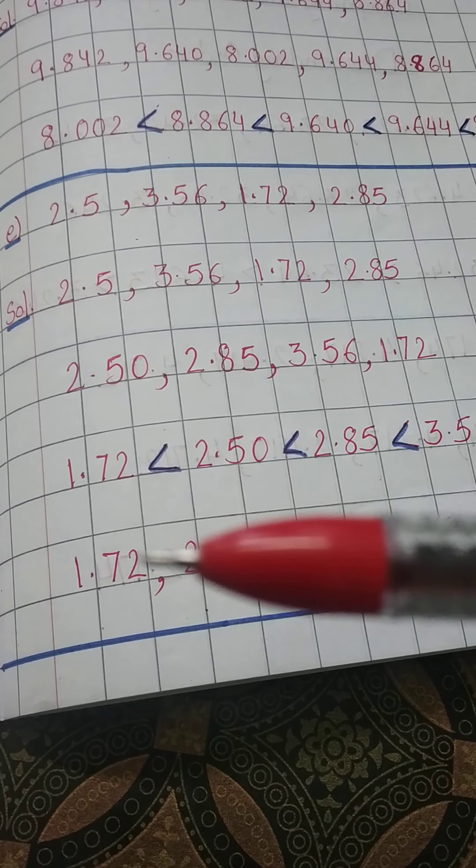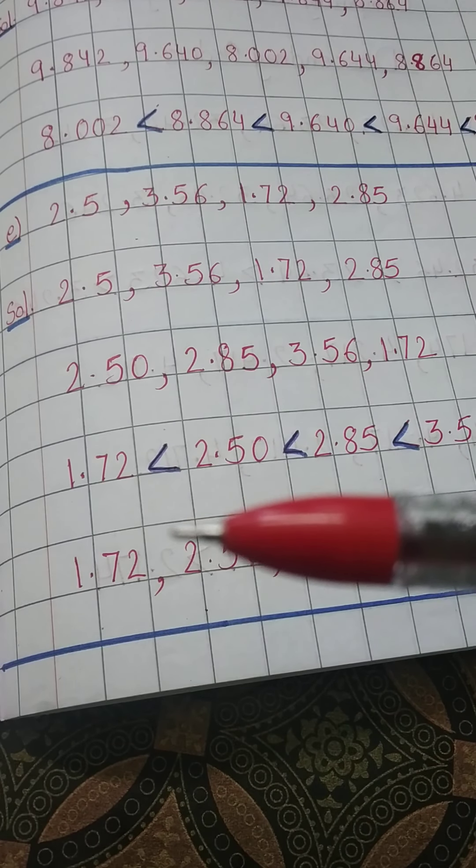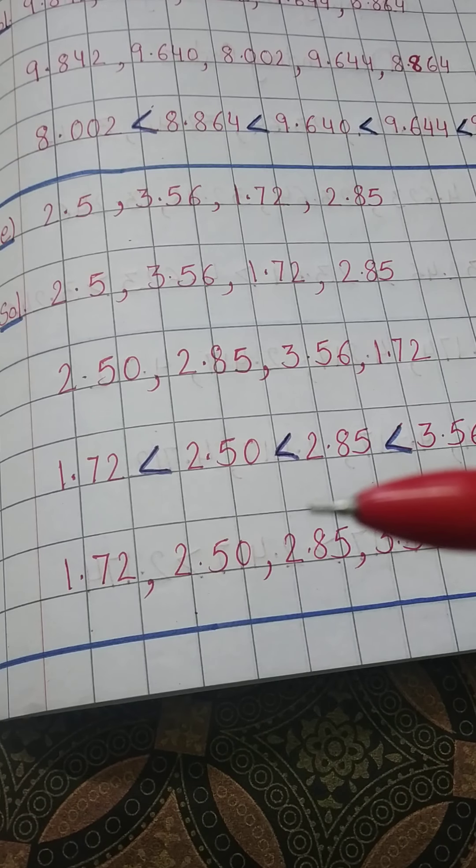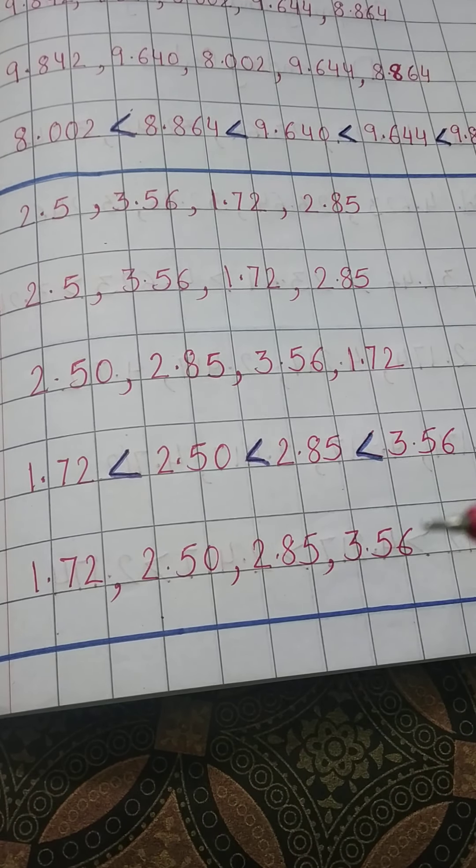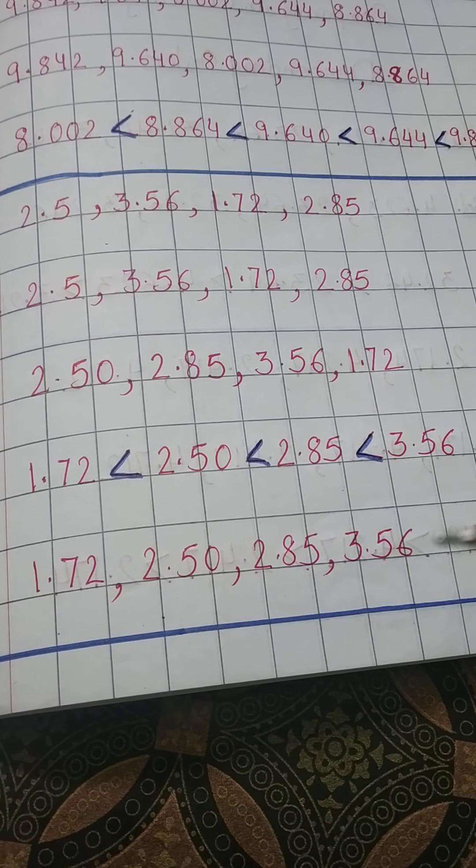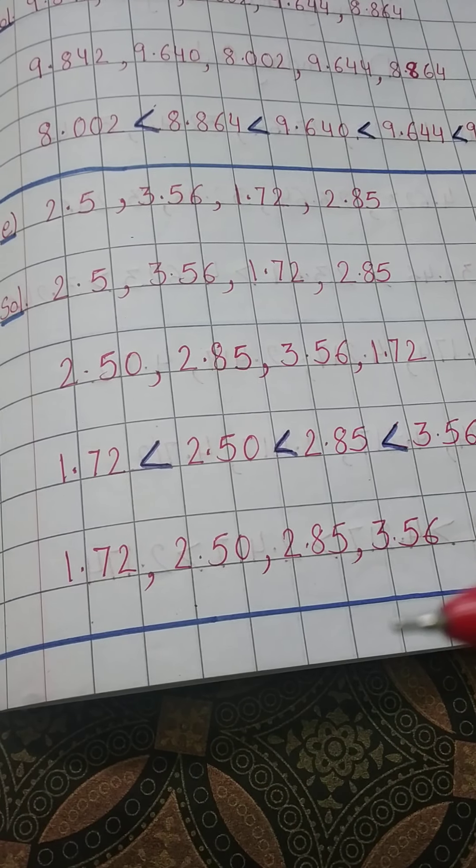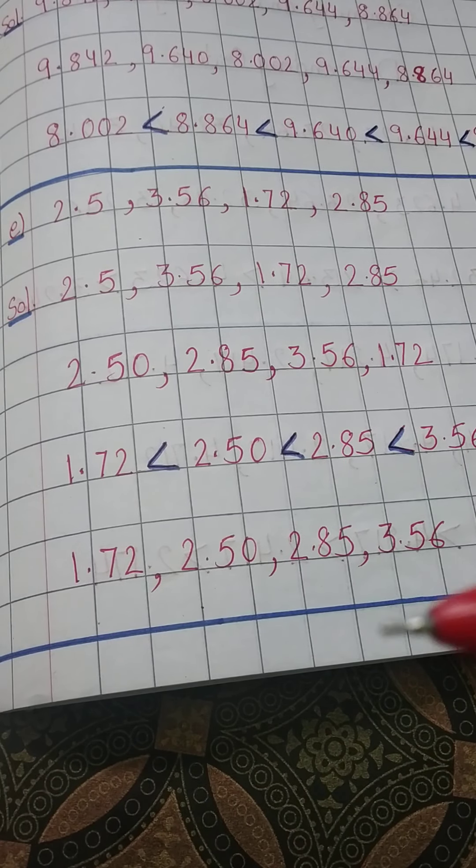So it is clear that 1.72 will be the least, so I will write this one first: 1.72 less than 2.50, less than 2.85, less than 3.56.